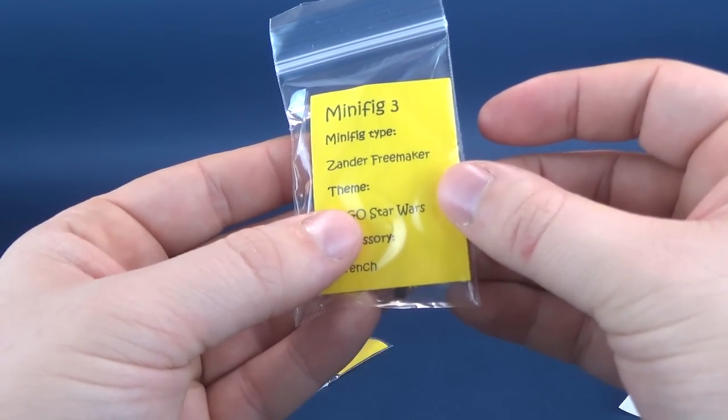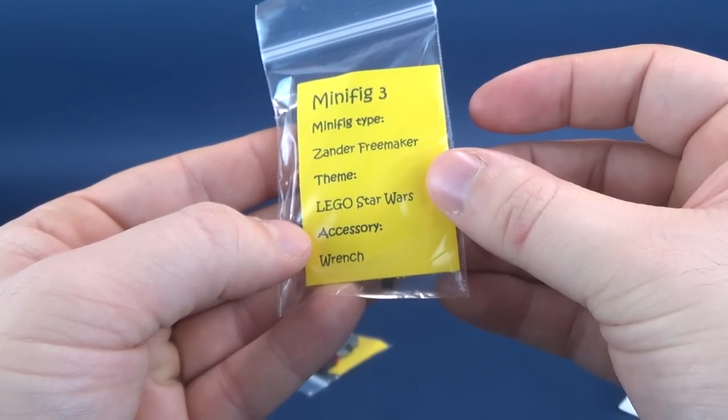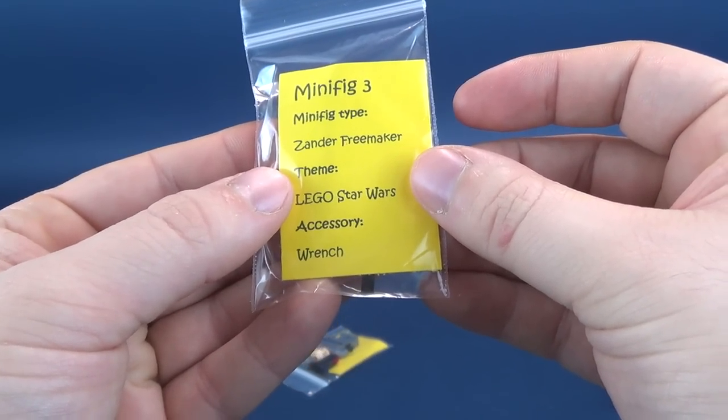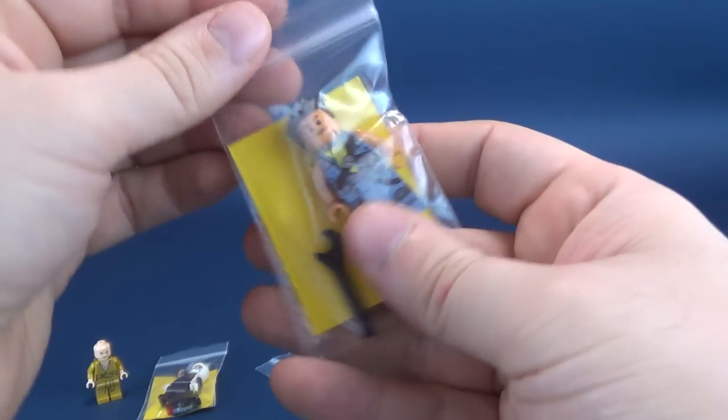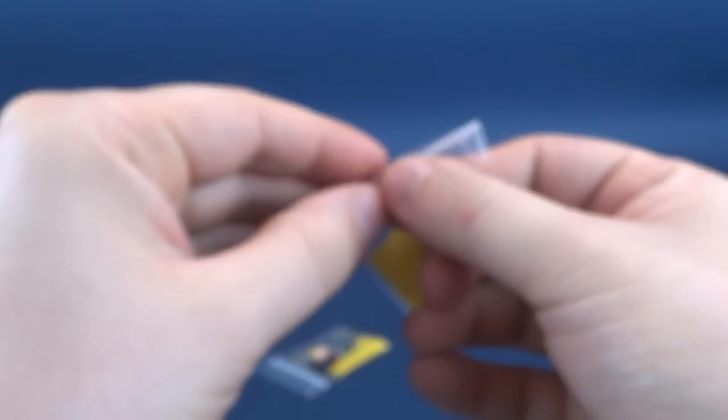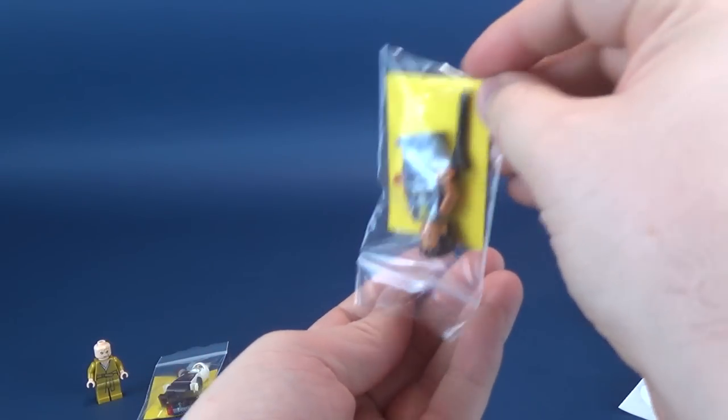I think we can all relate to the disappointment of some of the changes made in that movie. Sort of just dismisses everything, doesn't it? Moving along, this is Xander Freemaker. This is from the Lego Star Wars. And he comes with the accessory of a wrench. Minifigure number three. I guess I'm doing this sort of out of sequence.